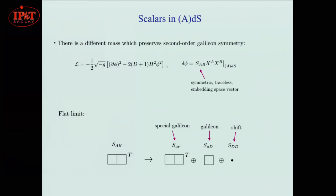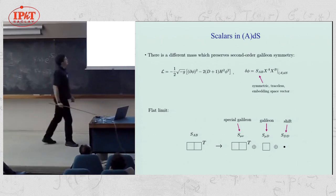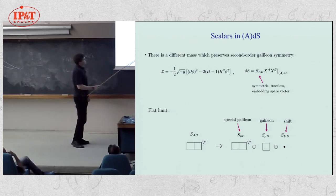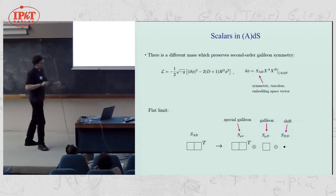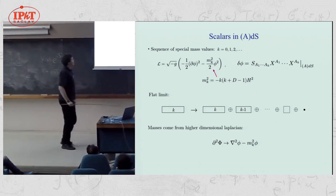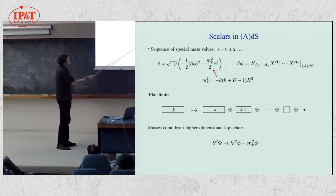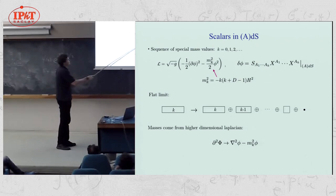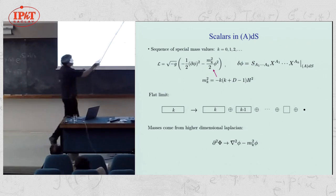There's another mass value where we have an embedding space symmetry — a version of the special Galilean symmetry — parameterized by a symmetric traceless embedding space tensor. In the flat limit, it breaks up into a symmetric traceless tensor, a vector, and a scalar, corresponding to the special Galilean, ordinary Galilean, and shift symmetry of flat space. There's a whole series of masses labeled by k: k equals 0 is the ordinary shift symmetry, k equals 1 is the Galilean, k equals 2 is the special Galilean, and so on. At each mass value you get an embedding space symmetry that reduces in the flat limit to the extended Galilean symmetry of order k. This all comes from the higher-dimensional Laplacian being invariant under all of these, and when pulled back to the ADS hypersurface it generates the mass term.